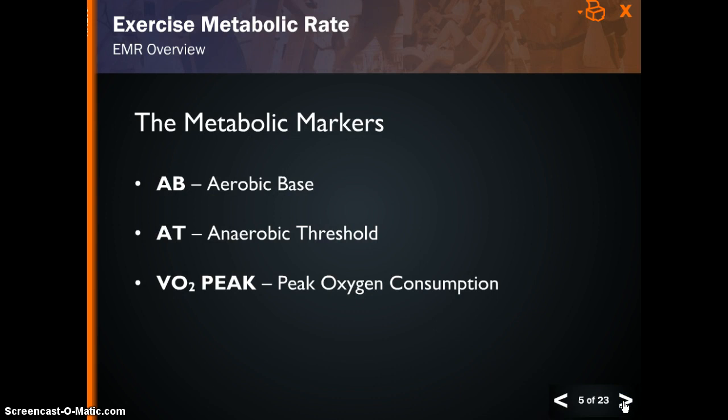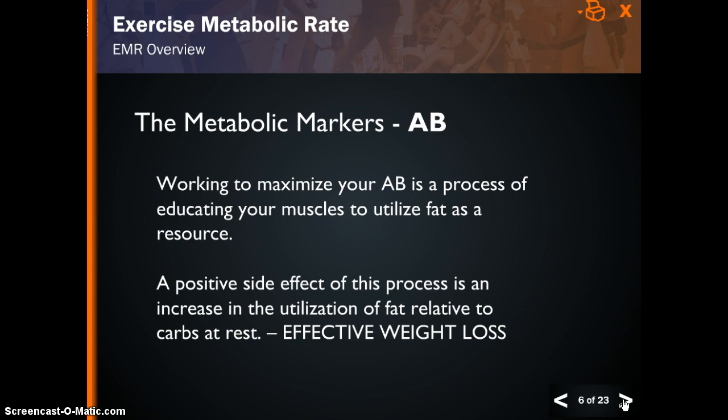The way we quantify metabolic rate is by looking for specific metabolic markers. The first metabolic marker we determine is aerobic base, or AB. This is the peak of your body's ability to utilize fat during exercise. The second metabolic marker is your anaerobic threshold, or AT. This is your highest sustainable aerobic work rate, meaning this is the highest sustainable rate at which you burn fat, although it isn't necessarily your highest fat utilization level. The third metabolic marker that we measure is peak VO2. This is the peak amount of oxygen that your body can consume.